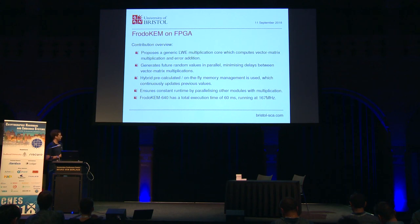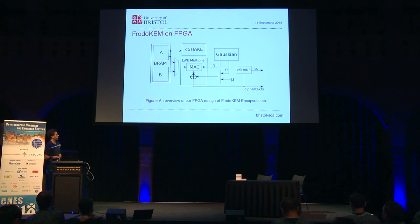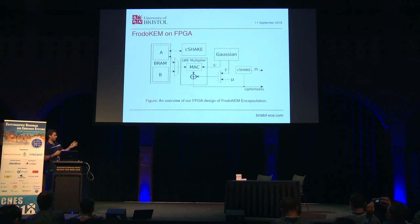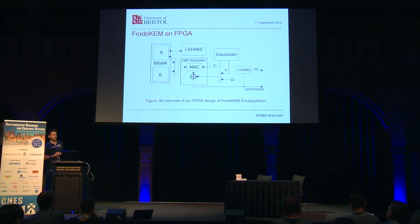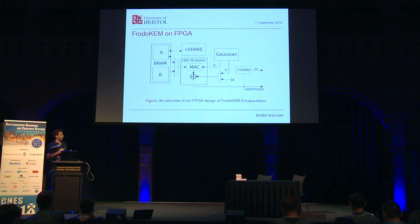The 128-bit FrodoCEM has a total execution of 60 milliseconds at 167 MHz. Here's an overview of the encapsulation design: in the middle we have the Learning with Errors multiplier, which takes inputs from BRAM where we store key B, and we also store random matrix A, generated on the fly from a C-SHAKE module. This takes input from the error distribution — the Gaussian block — and uses a DSP slice for multiply-and-accumulate operations. We add an error at the end of the vector-matrix multiplication to form the LWE calculation, output as ciphertext and input into the random oracle to calculate the shared secret.